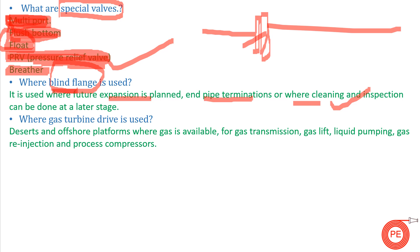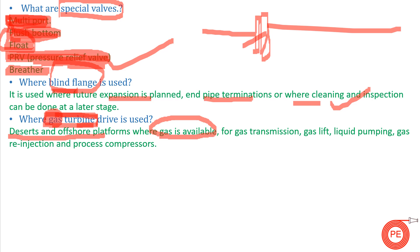The next question is: where is a gas turbine drive used? A gas turbine requires high-pressure gas to rotate the turbine. It is used in locations where abundant high-pressure gas is available, such as deserts and offshore platforms. Outside of these gas-rich locations, a gas turbine would not be practical.